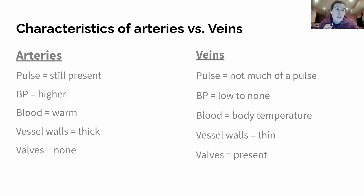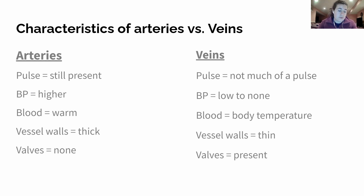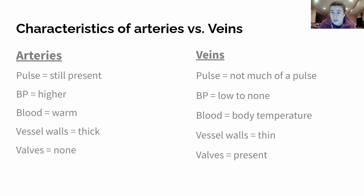The first thing I want to talk about is that there are certain characteristics of arteries and veins that pretty much explain why all of these characteristics are the way they are. Starting with arteries: the pulse is still present. We use arteries like the carotid or radial artery to feel our pulse. In veins, there's no pulse because there's no blood pressure there. Blood pressure is high in arteries, meaning blood is flowing.